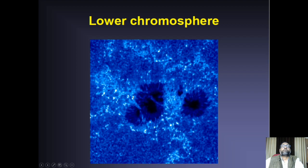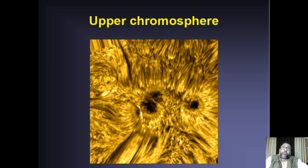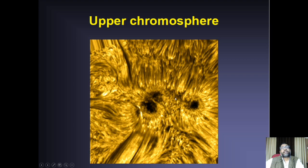Going further up about 1,500 kilometers or so, the same sunspot pair region looks so different — there are many finer structures, elongated structures. These images are taken with the H-alpha filter, which probes about 10,000 degree Kelvin plasma. We see much more detail and finer structures in this upper chromosphere.